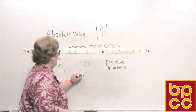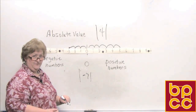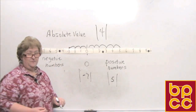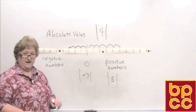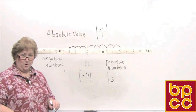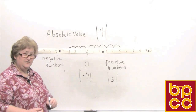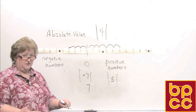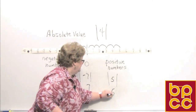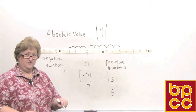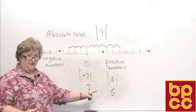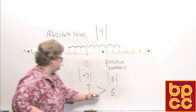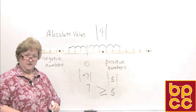Let's say we have the absolute value of negative 7 being compared to the absolute value of 5. You cannot compare numbers in absolute value until you bring them out of the absolute value bars. So I'll bring negative 7 out as a positive 7, and I'll bring 5 out as a positive 5, because that's how many jumps back to 0. Now that they're out of absolute value, 7 is greater than 5, so I put my greater than sign.